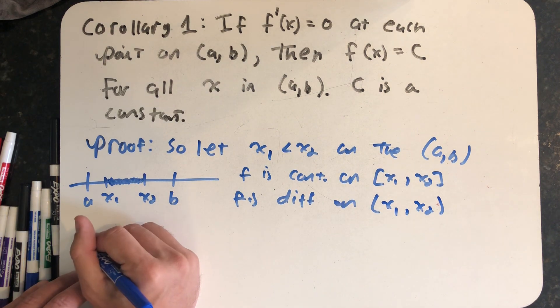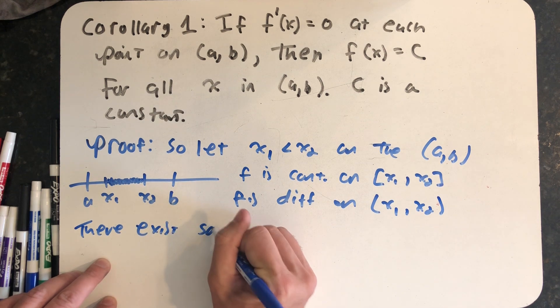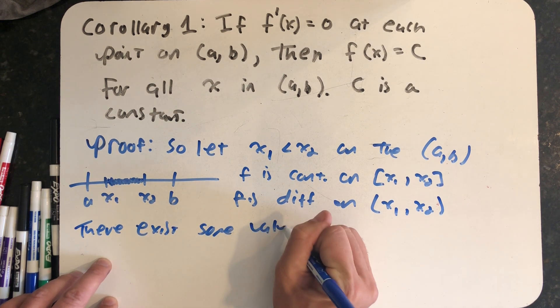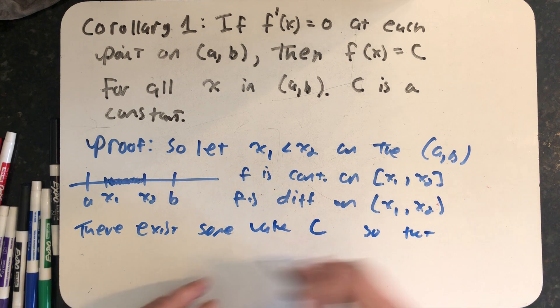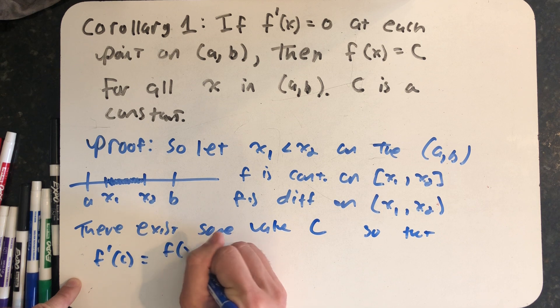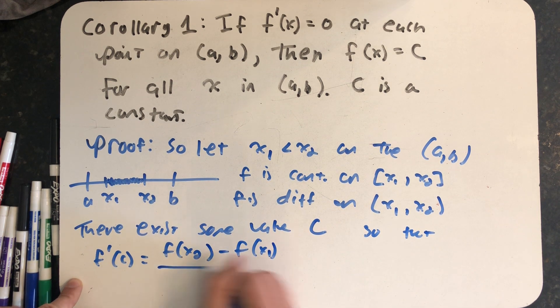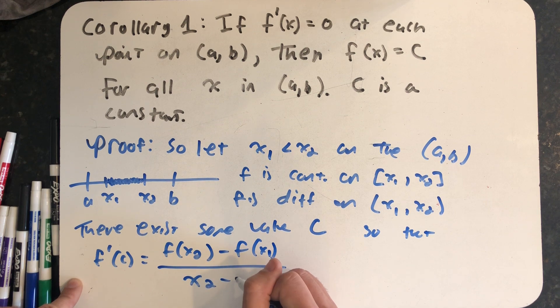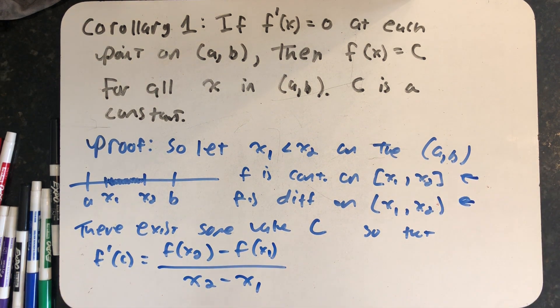So I know there exists some value c so that f prime of c is equal to f of x2 minus f of x1 all over x2 minus x1. Because on this interval, x1 to x2, I satisfied the hypotheses of the mean value theorem. So this equation has to be true.